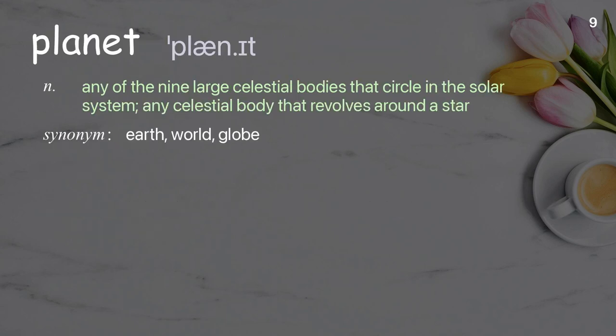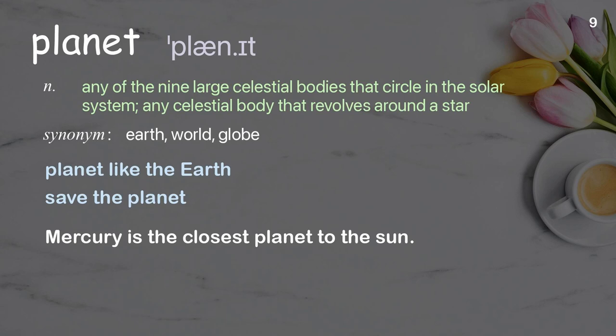Planet: any of the nine large celestial bodies that circle in the solar system; any celestial body that revolves around a star. Examples: planet like the Earth, save the planet. Mercury is the closest planet to the sun.